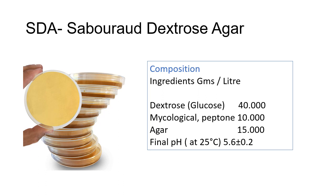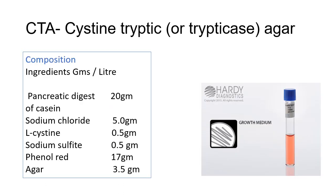Next is CTA, which stands for Cysteine Trypticase Agar. The composition includes pancreatic digest of casein, sodium chloride, L-cysteine, sodium sulfite, phenol red, and agar. Cysteine and peptone supply nutrients necessary for the growth of fastidious microorganisms. CTA media is supplemented with a one percent concentration of specific carbohydrates and is used to detect fermentation reactions as a biochemical test.